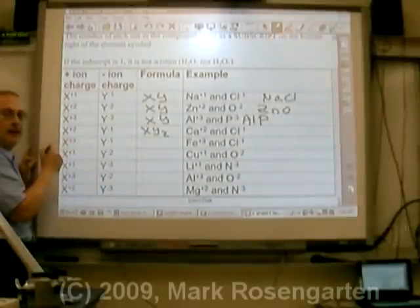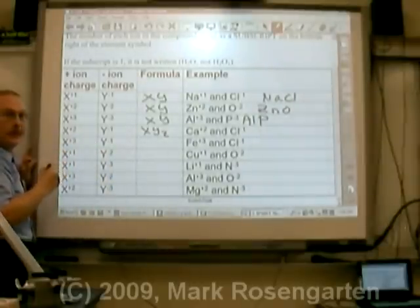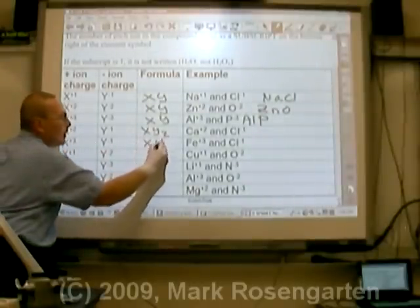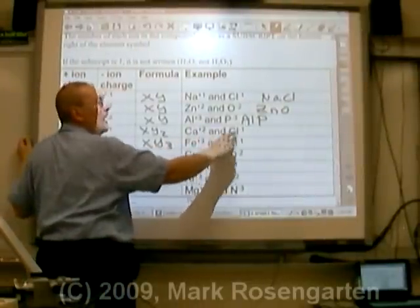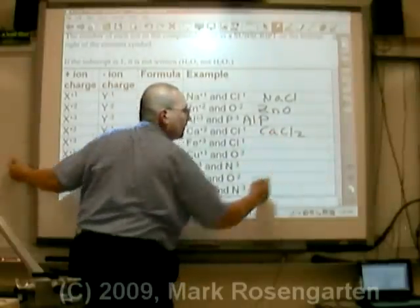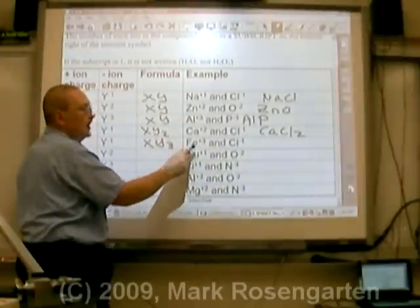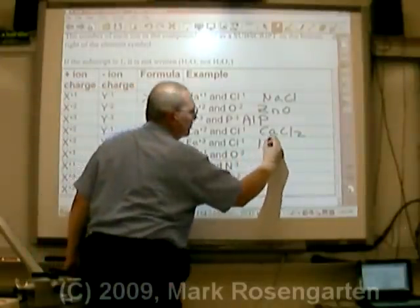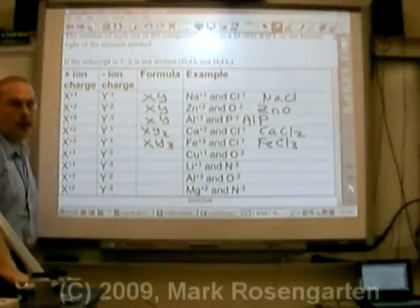X plus three Y minus one, it takes three minus ones to cancel out a plus three, X Y three. So for calcium and chloride, it takes two chlorides to cancel out the calcium. For the iron three chloride, it takes three chlorides to cancel out an iron. And that's the formula for those compounds.